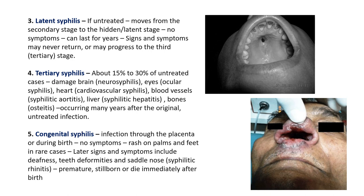Congenital syphilis is an infection transmitted through the placenta or during birth. There are usually no symptoms observed initially, but in some cases it is characterized by rashes on the palms and feet. Eventually it can develop into deafness, teeth deformities, or saddle nose — also called syphilitic rhinitis — where the septum in the nose is absent. It may also result in a premature baby, a stillborn baby, or a baby that dies immediately after birth.